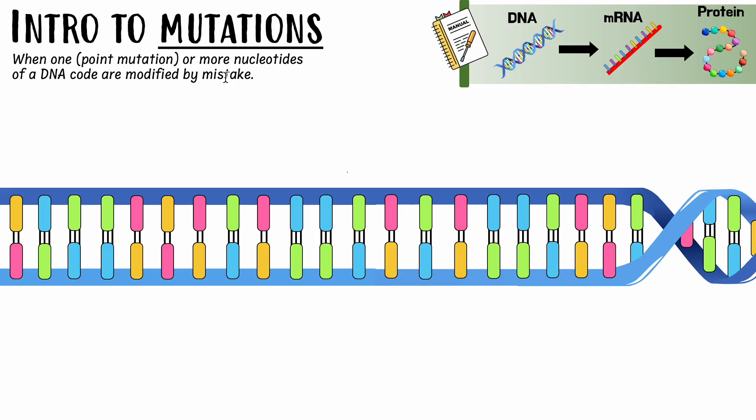Now why did I put here the word point mutation? So a point mutation is a mutation that only involves one nucleotide, but we know that a mutation can involve one nucleotide, three nucleotides, ten nucleotides. So when it involves one we call it a point mutation, but it can happen through many nucleotides.